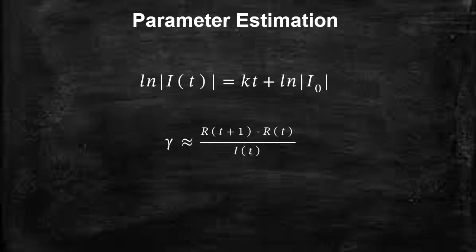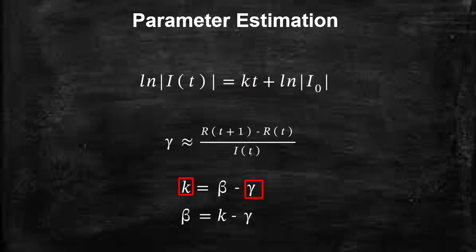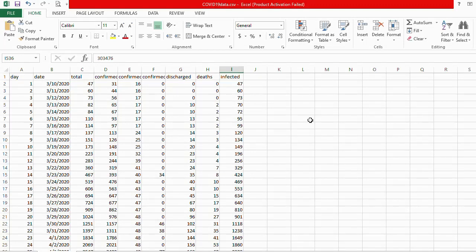Now we can use these two equations — one to estimate the coefficient k and one to estimate gamma — and once we have both gamma and k we can find beta. Let's jump to Python. This is the dataset I'm going to use. It has several columns: I'll use the column for day, the infected class, and I'm going to combine discharged and death into one column called the removed class.